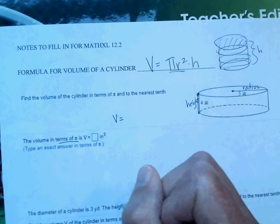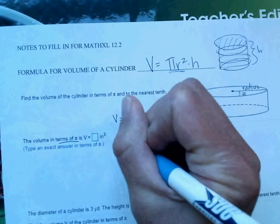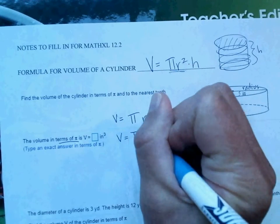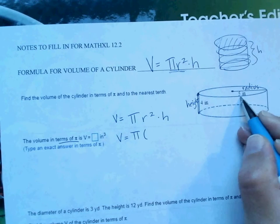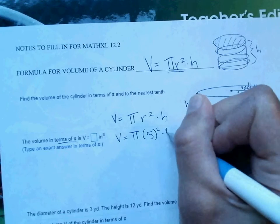So volume equals pi r squared times h. So volume equals pi times the radius is 5. So 5 squared times the height, and the height is 4.